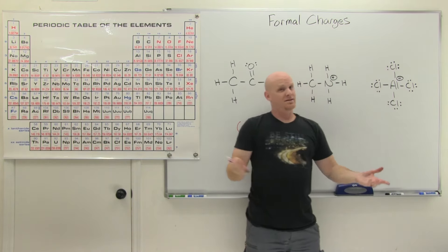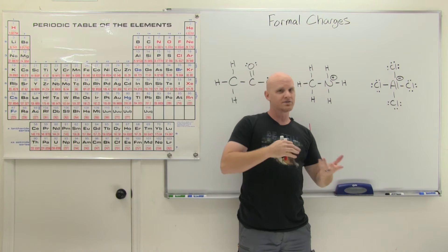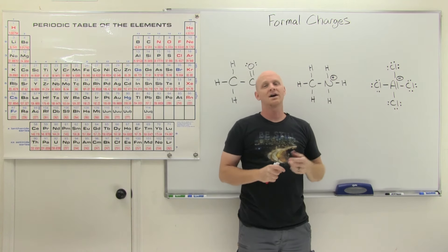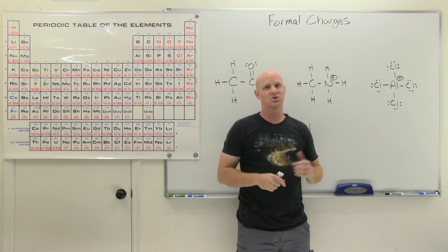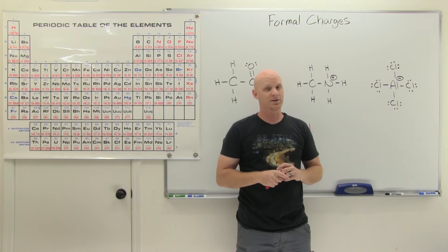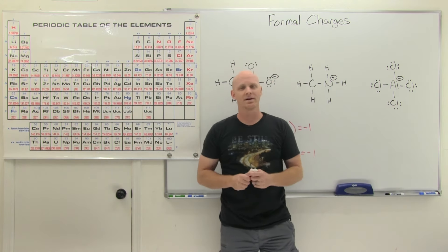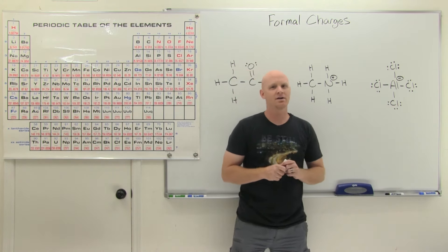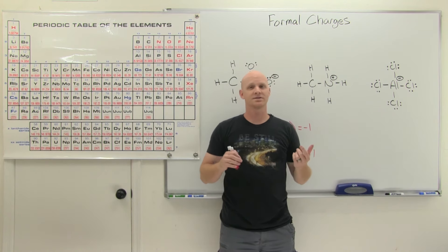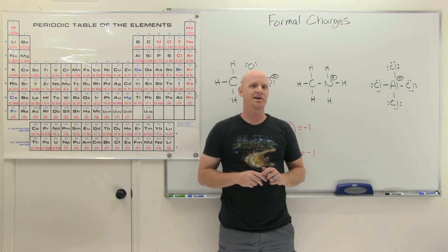So I highly recommend remembering formal charge as: normal valence minus dots and lines — life is good. You definitely need to be able to assign formal charges quickly for your first exam in organic chemistry. If you've benefited from this lesson, please give me a like and a share. For practice problems and study guides that go with this course, check out my premium course at chadsprep.com. Happy studying.